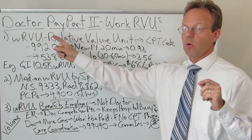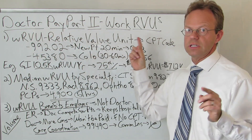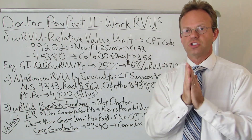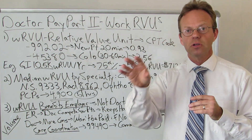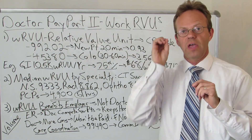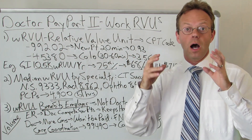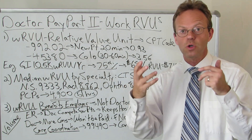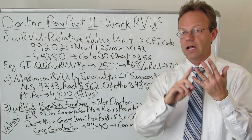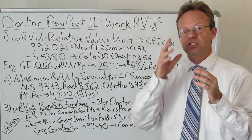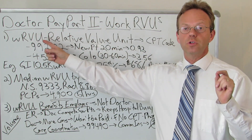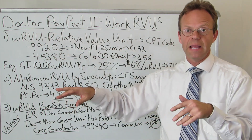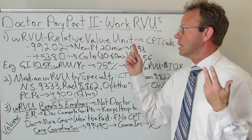Work RVUs — Relative Value Units — are tied to specific CPT codes. When a doctor bills for their services, all those bills have codes on them for either evaluation and management, which are office visit codes, or for doing a particular procedure like a colonoscopy or a surgery. The Relative Value Units, which are determined by RUC — covered in my previous video — are tied to those CPT codes.